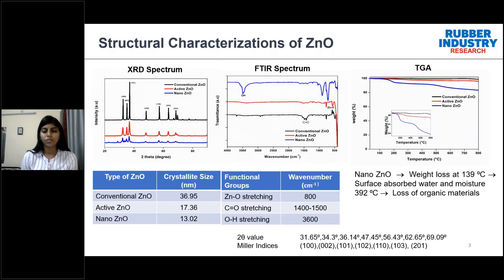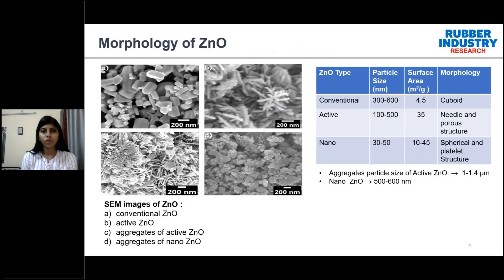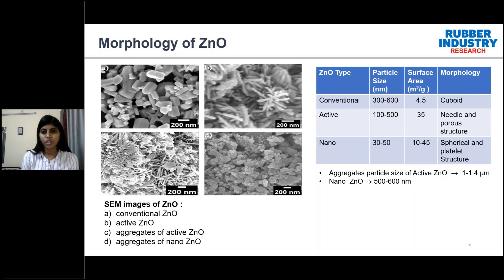Regarding the morphology of the zinc oxide types: conventional zinc oxide has a cuboid structure with a particle size of 300 to 600 nanometers; active zinc oxide has a nodular and porous structure with a particle size of 100 to 500 nanometers; and nano zinc oxide has a spherical and platelet structure with a particle size of 30 to 50 nanometers and an aggregate size of 500 to 600 nanometers.